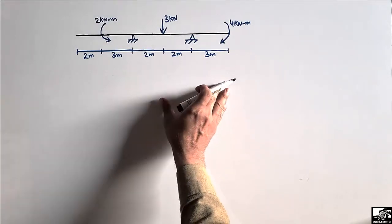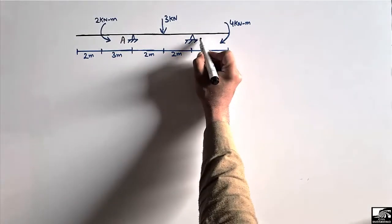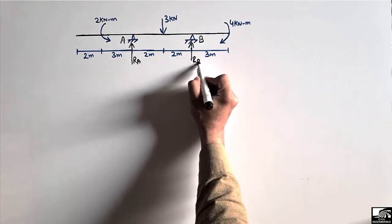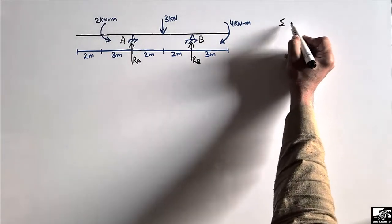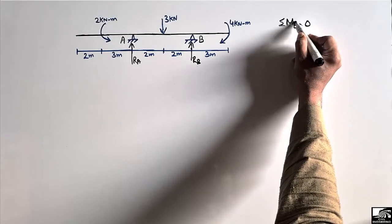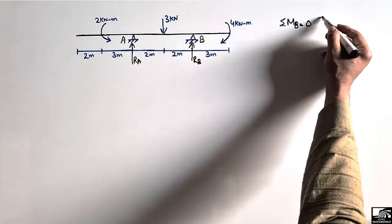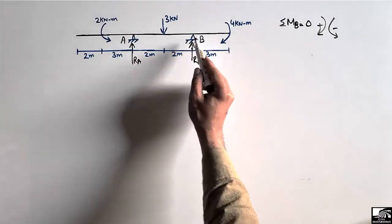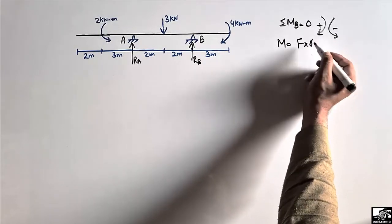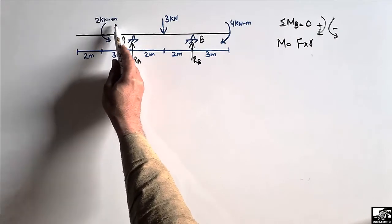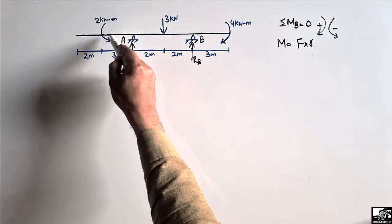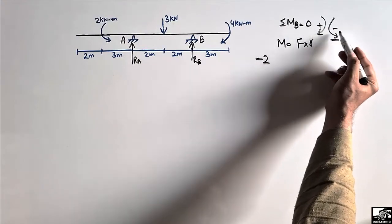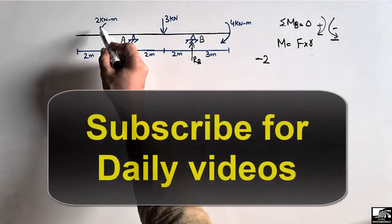Let's consider support A and support B, which resist vertical reactions RA and RB respectively. To find support reactions, we take the summation of moments at any point equal to zero. Let's take moments about point B, with clockwise moment taken as positive and anti-clockwise moment taken as negative. The 2 kN·m moment acts in the anti-clockwise direction, so it is taken as minus 2.